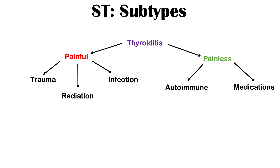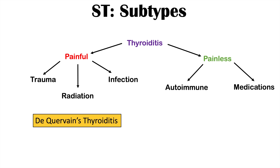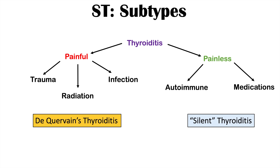In this lesson we're going to more specifically focus on painful thyroiditis, though a lot of what we discuss can apply to the painless variety as well. If it is painful, it's going to be known as de Quervain's thyroiditis. If it is painless, it's known as silent thyroiditis. It's very important to at least distinguish between painful and painless.